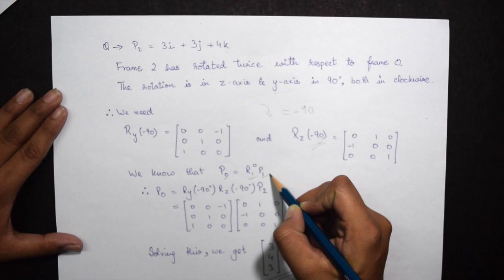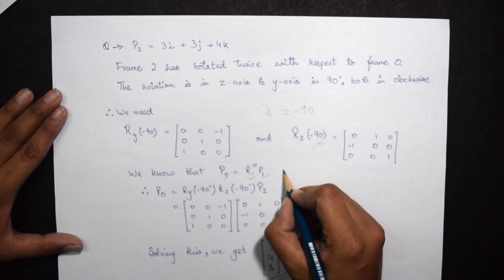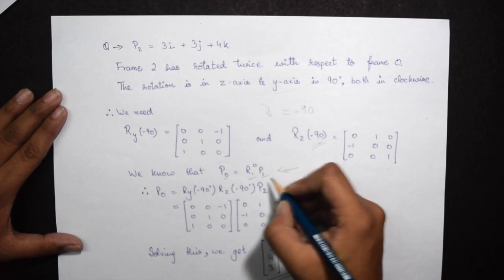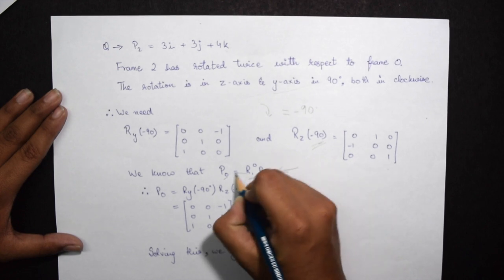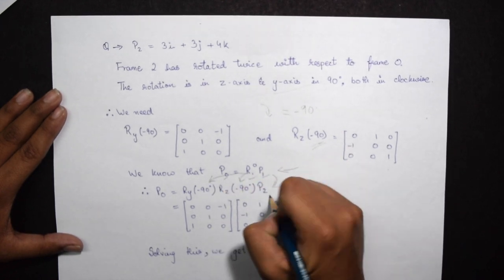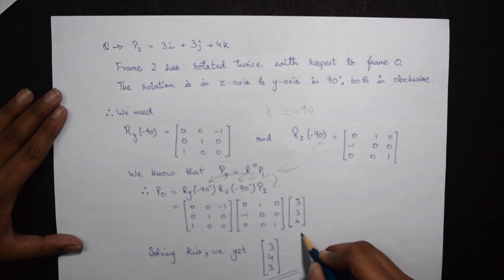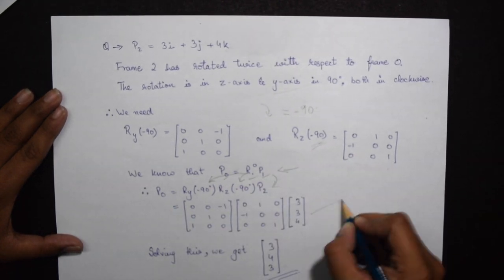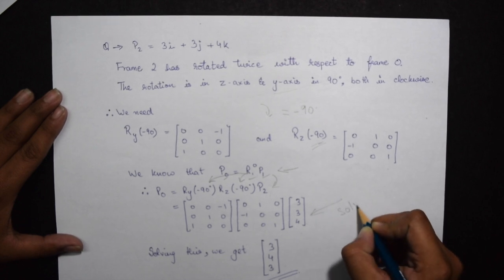Like I have explained to you, P0 equals R1 with respect to the 0 frame times P1. We have written this equation: first we rotated it in Ry and then Rz. I have directly written it because it's very simple and you can easily do it. Just substitute the values of the matrices above and you get this question.